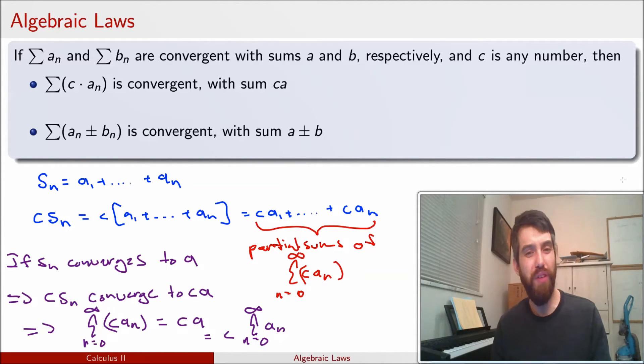So it's a proof that almost doesn't seem like it's doing anything, because we're trying to prove a property, and we just use that property to prove it. But the important point is, I'm using that property for sequences to prove the analogous property for series. And that kind of pattern goes on all the time in mathematics.